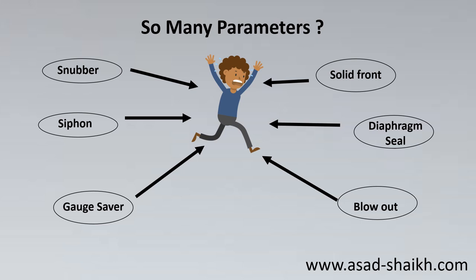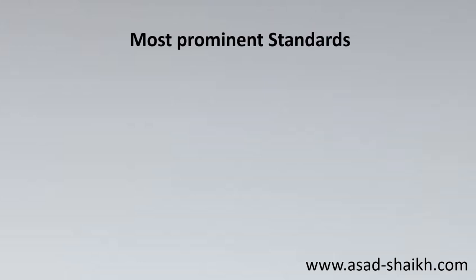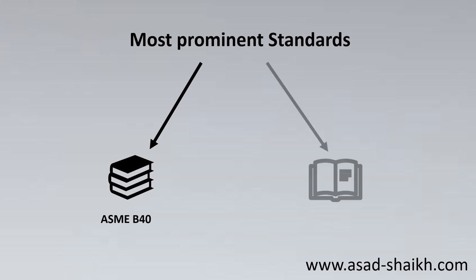This led to the understanding of standards. I realized there are two prominent standards available for pressure gauges. Applying the 80/20 rule, the majority of projects and literature I've gone through for pressure gauges incorporate these two standards: the first being ASME B40, and the second being EN 837.